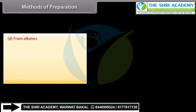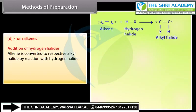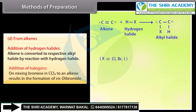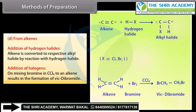From alkenes: addition of hydrogen halides — an alkene is converted to an alkyl halide by a reaction with hydrogen halide. Addition of halogens — on mixing bromine in CCl4 with an alkene, it results in the formation of a vic-dibromide.